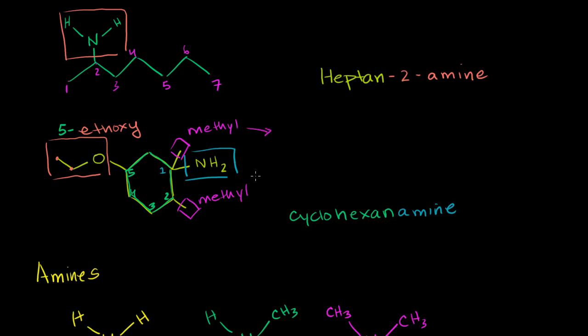And then when you want to list them in order, the ethoxy would take precedence in alphabetical, because the di you shouldn't count in the alphabetical order. This is just saying two-methyl. So you really just want to look at the two of whatever you're talking about. M comes after E in alphabetical order. So this is going to be 5-ethoxy.